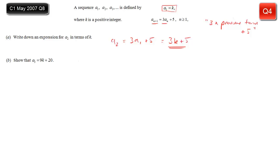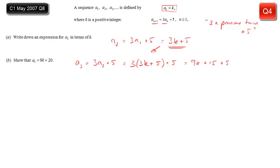Part b: show that a3 equals 9k plus 20. The third term is 3 times the second term plus 5. We just worked out the second term, so: 3 times 3k plus 5, then plus 5. Multiplying out the brackets gives 9k plus 15, and adding the plus 5 gives 9k plus 20 — exactly what we wanted.